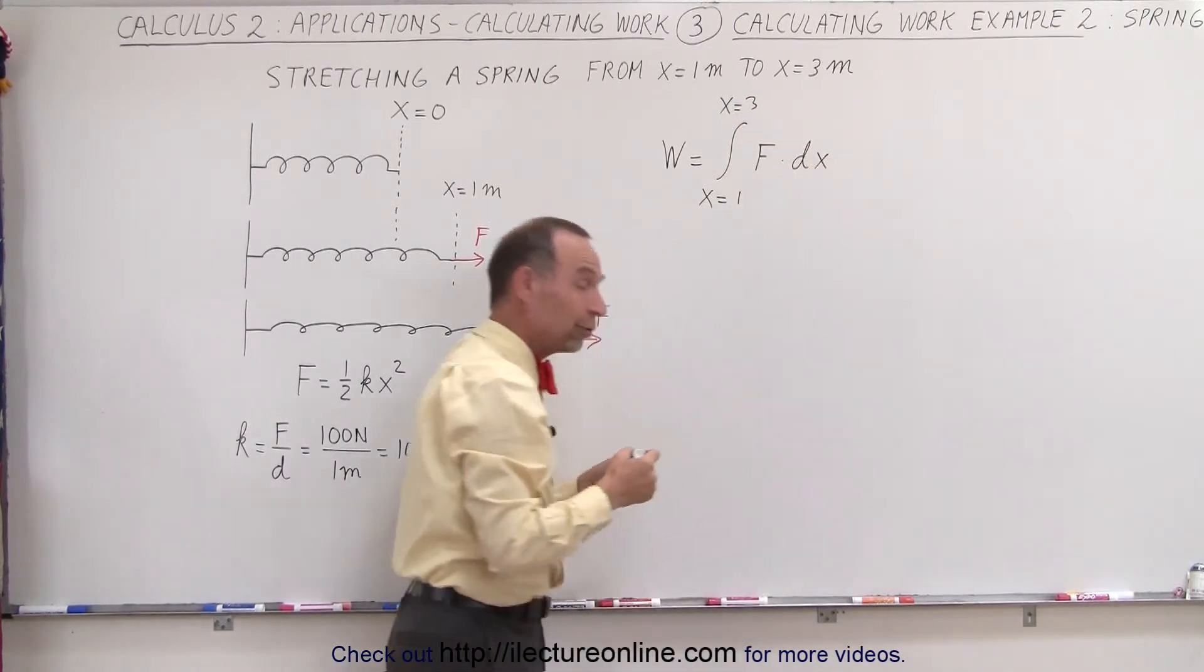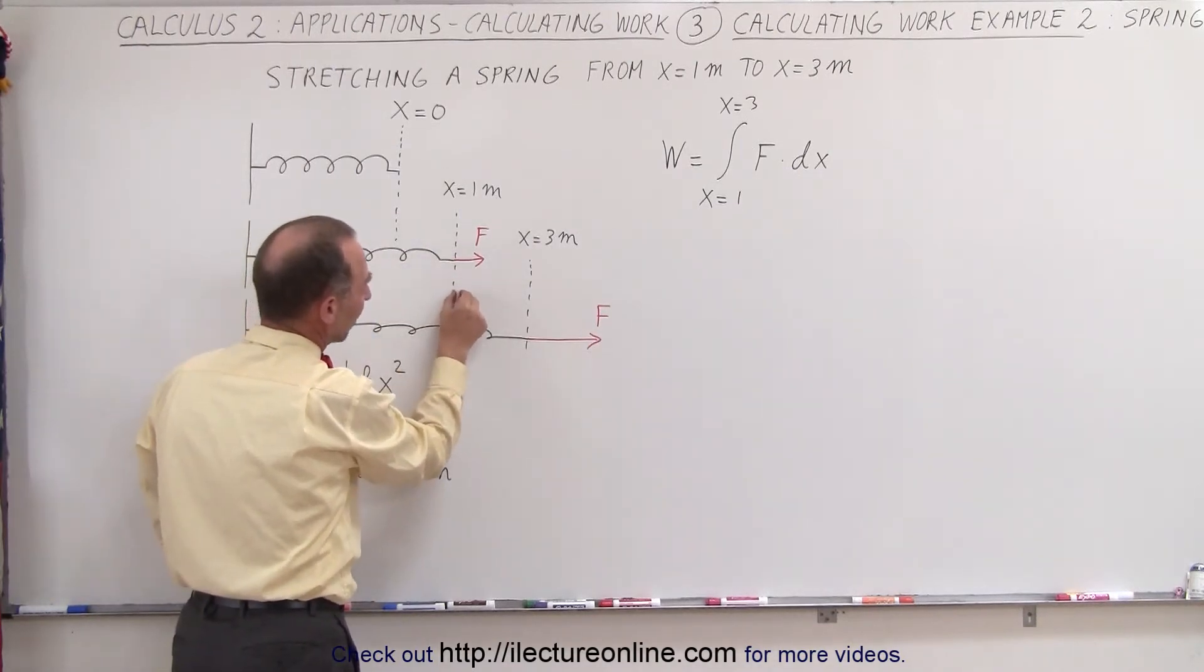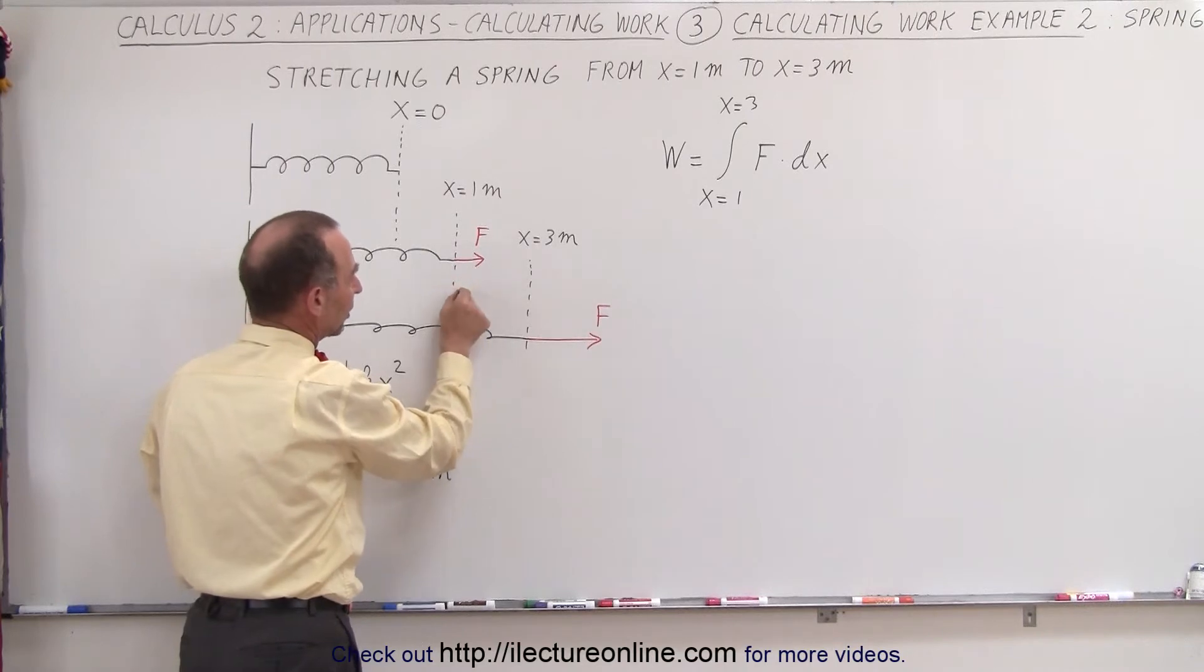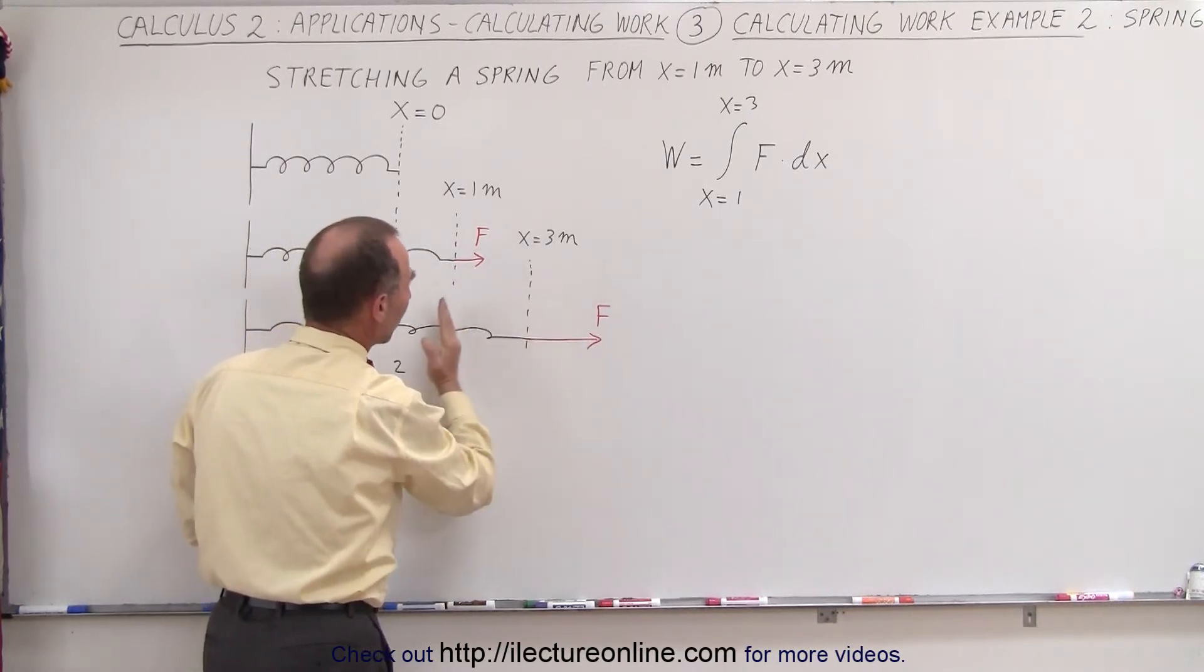So what we're going to do here is we're going to pull the spring just a small amount of dx from this position to the next position, calculate the work done, and extend it again, and again, and again, and we'll sum them all up going from 1 to 3.